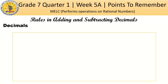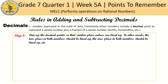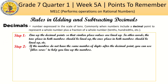How about the rules in adding and subtracting decimals? Decimals are numbers expressed in the scale of tens — commonly, numbers that include a decimal point to represent a whole number plus a fraction of a whole number: tens, hundreds, thousands, etc. Step 1: line up the decimal point so that similar place values are aligned — the tens place, ones place, etc. Step 2: if the numbers do not have the same number of digits after the decimal point, use filler zeros to help line up the numbers. Step 3: add or subtract as indicated.